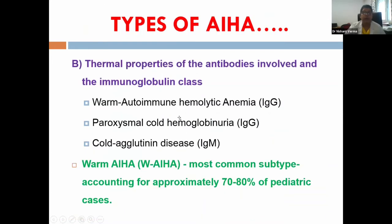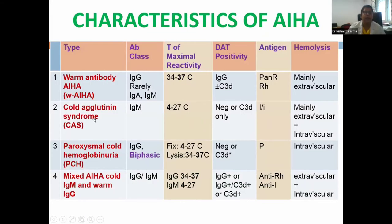The second classification is on the basis of antibodies, giving us the three main types: warm type, cold agglutinin type, and paroxysmal cold hemoglobinuria — with the warm one being the most common.